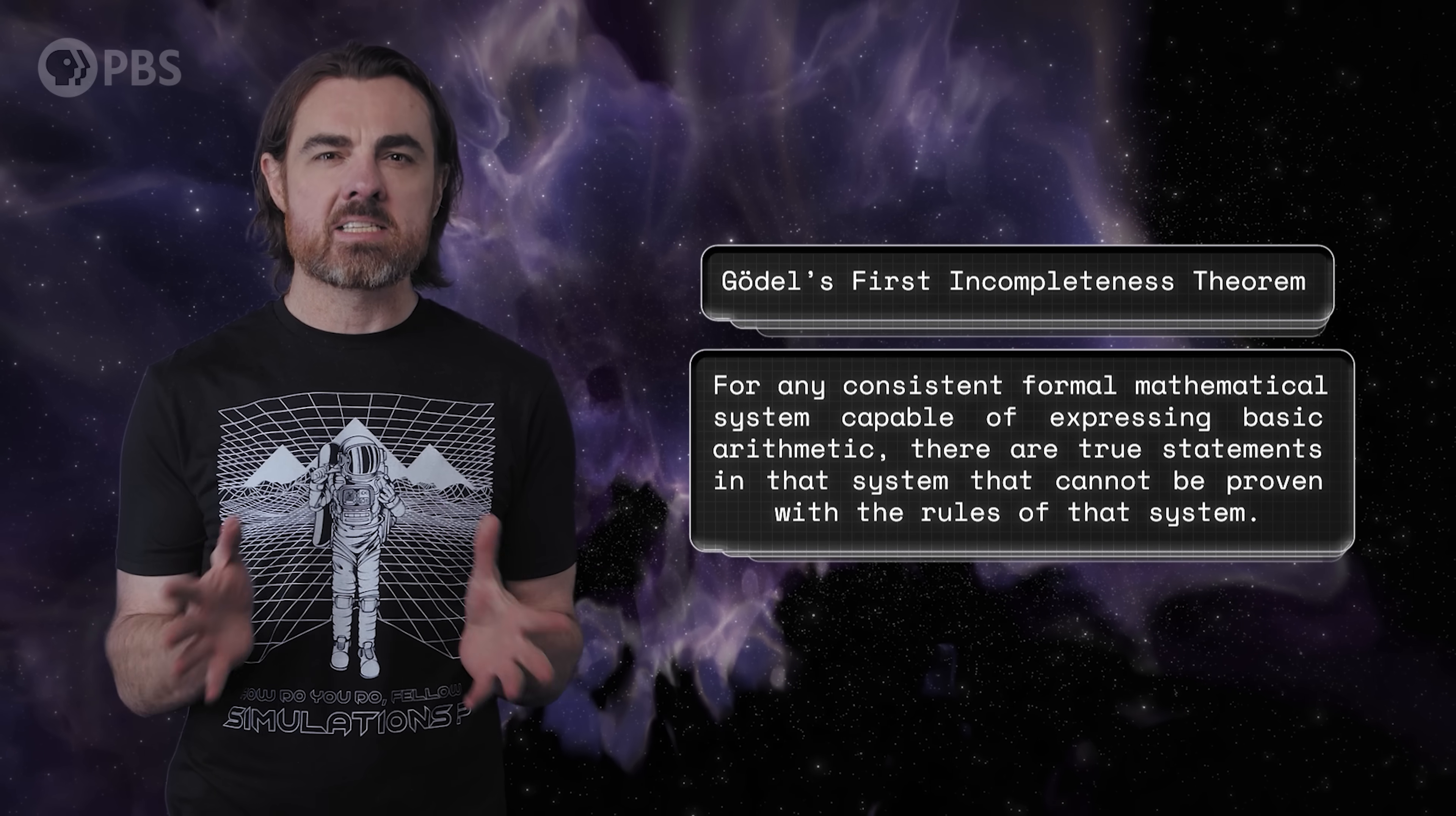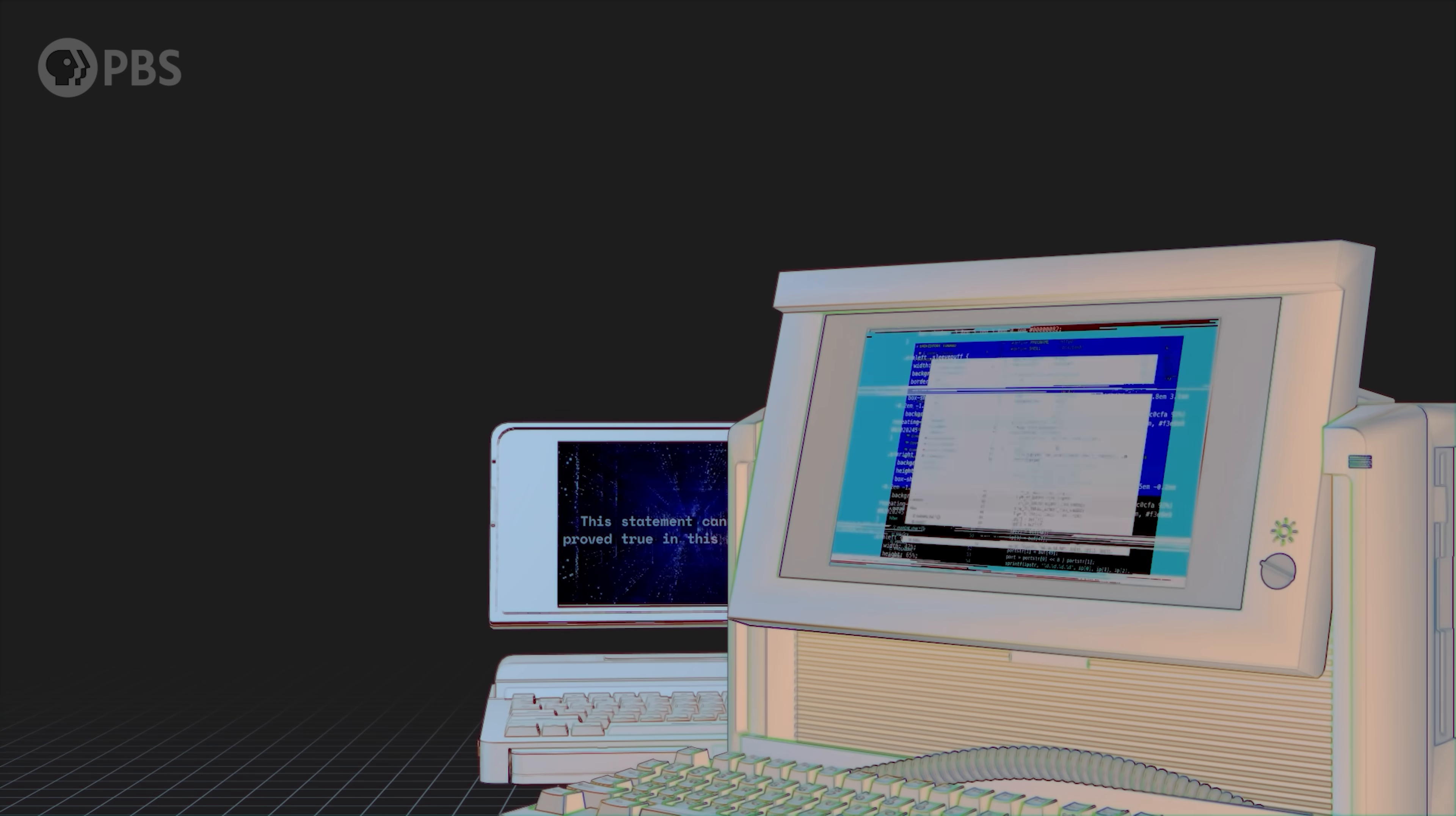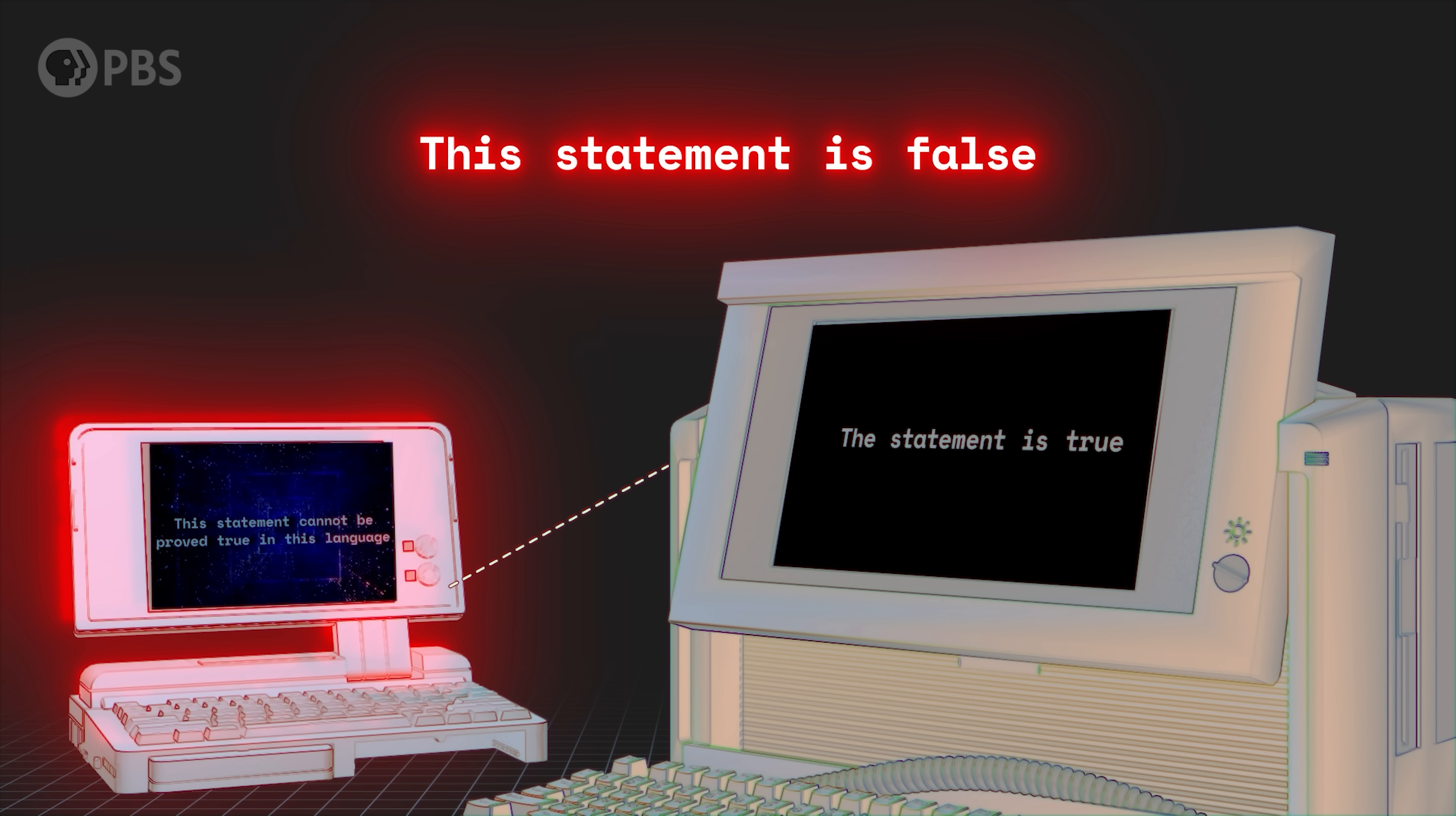The story starts with Roger Penrose as a young man attending a lecture on the Gödel incompleteness theorems. These are the mathematical arguments by logician Kurt Gödel which prove the limits of proof. The first incompleteness theorem says that for any consistent formal mathematical system capable of expressing basic arithmetic, there are true statements in that system that cannot be proven with the rules of that system. Here's an example of an unprovable statement: this statement cannot be proved in this language.